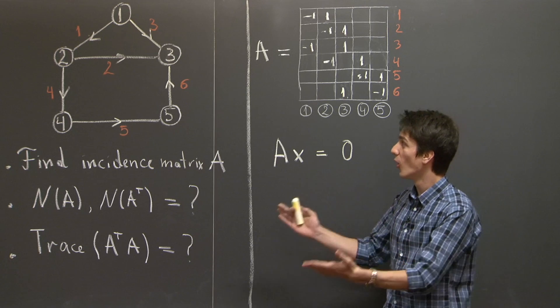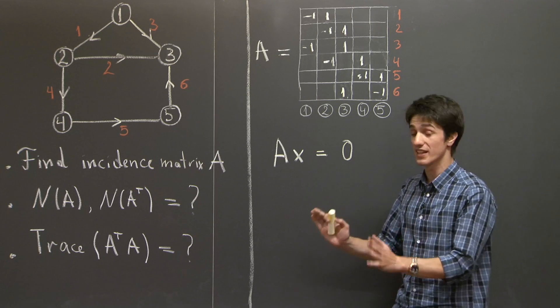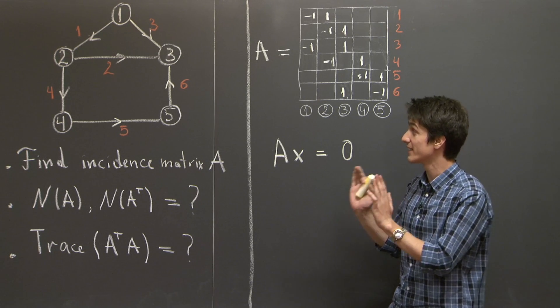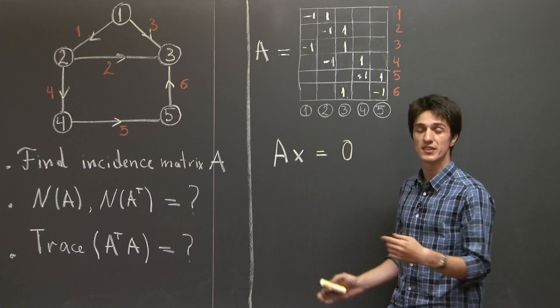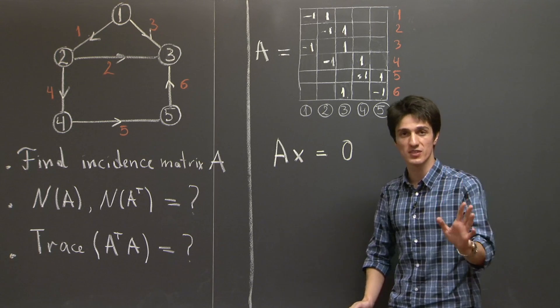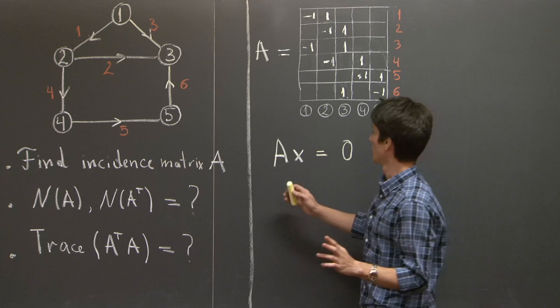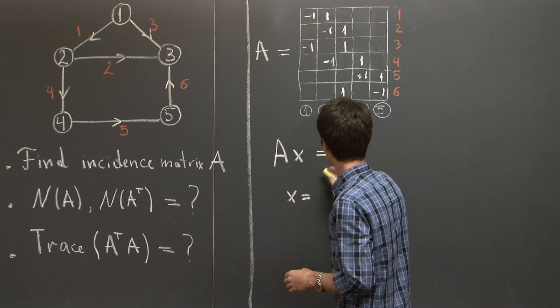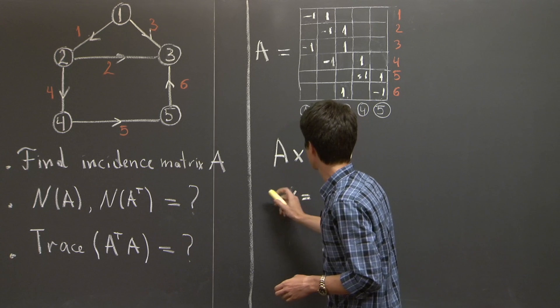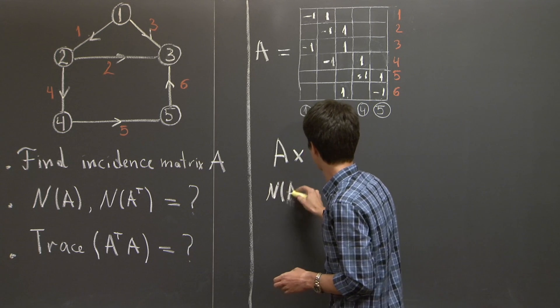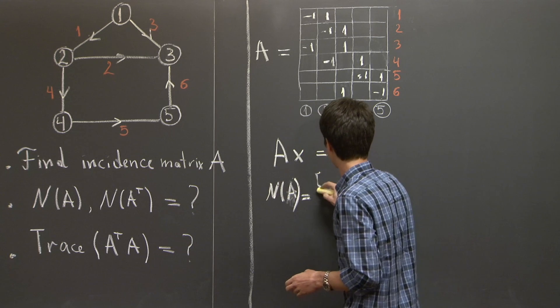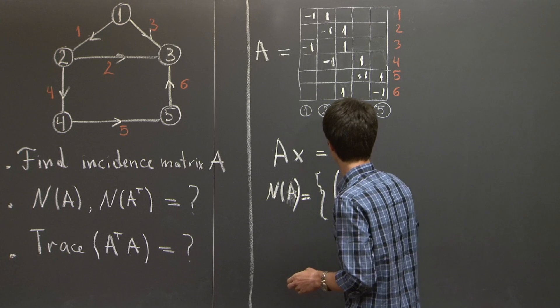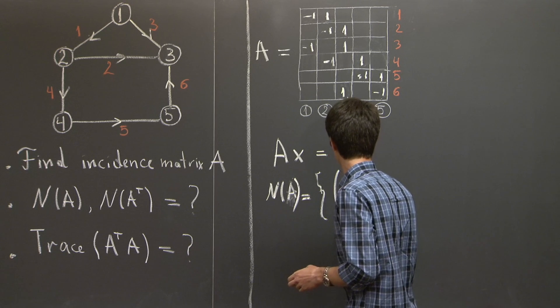Therefore, all the potentials at all the nodes need to be equal to a constant number. So therefore, we conclude that the null space of A is spanned by constant 1.